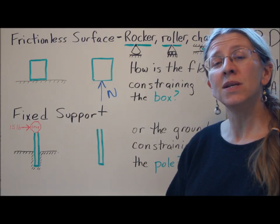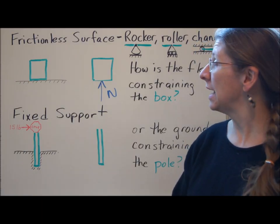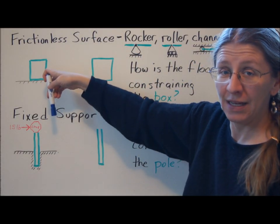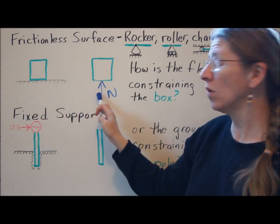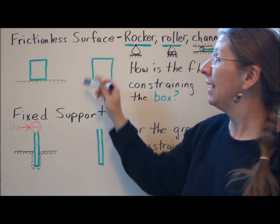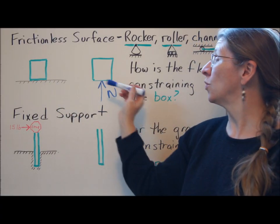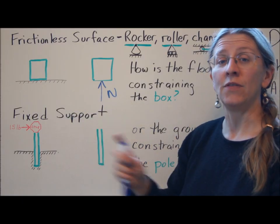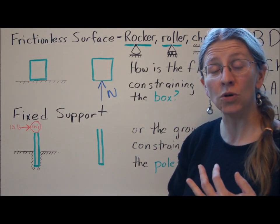The question becomes, how is the surface constraining your box? In this case, the box can't fall through the surface. It's held in place from falling this way, so we need a force in that direction. The box is not held in place from going this way, so we do not need a force in that direction. If it can't move, you get a force. If it can move, you don't.